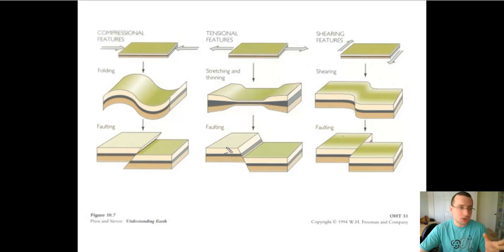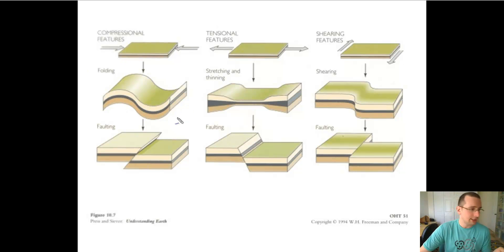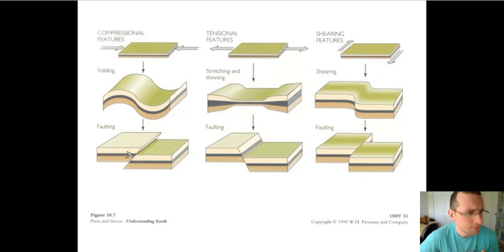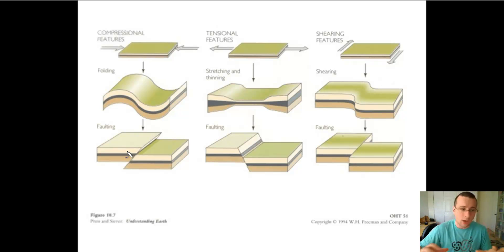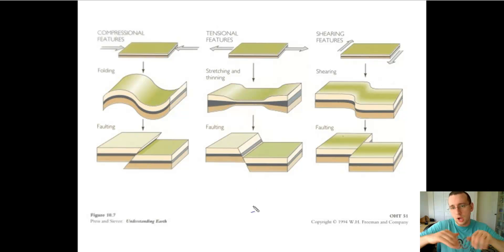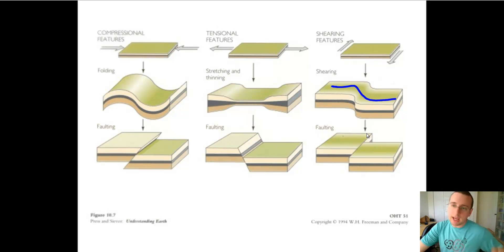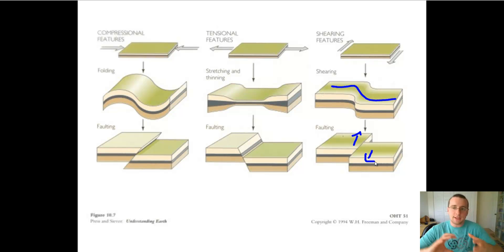Because of compressive stress, the rock will fold and form structures called synclines and anticlines, and it will also crack under a lot of stress and form things called reverse faults or thrust faults. Under tensional stress, the rock will stretch or thin out, and when it cracks, it forms what we call a normal fault. Under shear stress, the rocks will bend in S-like conformations, and when they crack, we call them transform faults. The kinds of strain that happen will depend on the kinds of stress that's applied.